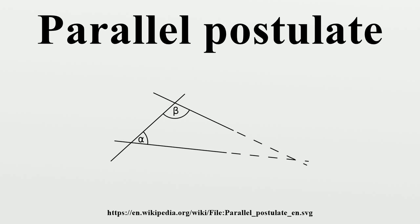Ibn al-Haytham, an Arab mathematician, made an attempt at proving the parallel postulate using a proof by contradiction, in the course of which he introduced the concept of motion and transformation into geometry. He formulated the Lambert quadrilateral,